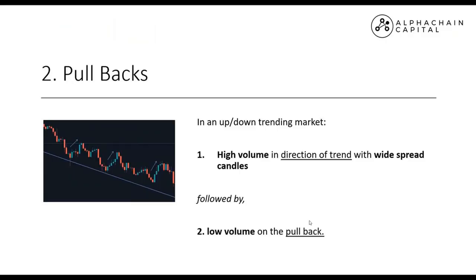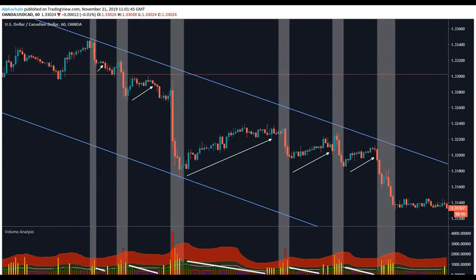The second example is pullbacks. When we're in a trending market, whether up or down, here's how to identify when we're seeing a pullback. In a trending market, you can draw your support and resistance levels. We're looking for high volume in the direction of the trend with wide-spread candles, followed by low volume on the pullback.